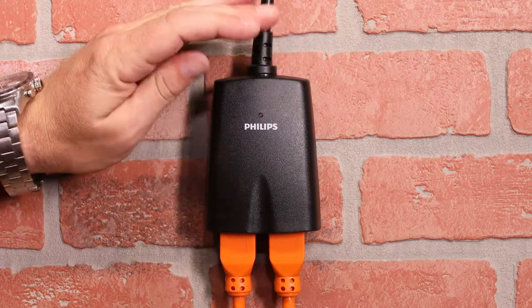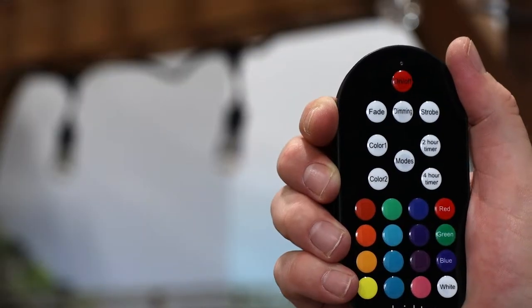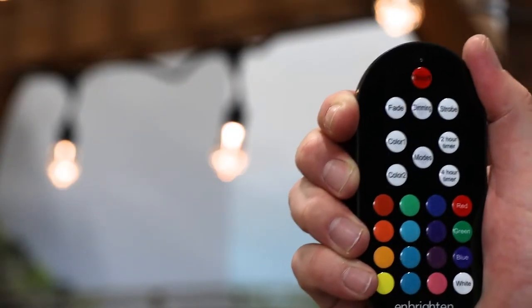Plug your device or devices into either outlet on the bottom of the receiver. If your connected equipment has a power switch, it must be in the on position.